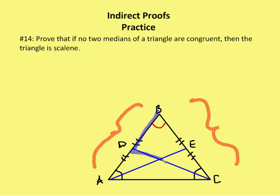I have triangle BDC and triangle BEA, so these two triangles are congruent by side-angle-side. If that's the case, then by CPCTC, AE is congruent to DC. But AE and DC are the medians. So if I have an isosceles triangle — a triangle in which at least two sides are congruent — then there are going to be medians that are congruent as well. Therefore, if a triangle has no congruent medians, it has to be a scalene triangle.